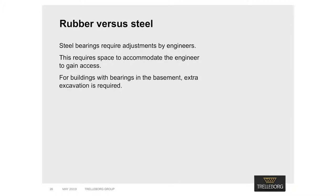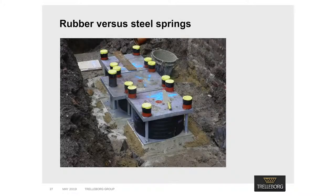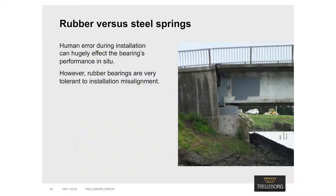More significant is the need for a space large enough to accommodate the engineer to gain access at the base of the building. For buildings with bearings sited in excavated basements, additional excavation must be completed to ensure that this space is made available. In comparison, rubber bearings do not require any routine attention after they have been installed. In fact, some are cleverly designed to allow remote pre-compression with self-releasing tie rods, eliminating the need for deep trenches for personnel access. The installation of an isolation bearing can fall victim to possible human error, which can have a colossal impact on performance in situ. However, rubber bearings are very tolerant to installation misalignment.